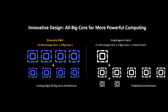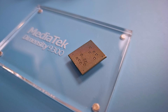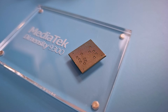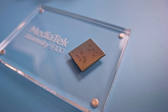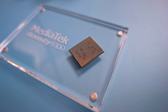The Dimensity 9300 takes a unique approach to the design, calling it all-big-core architecture, with 4 large cores and 4 big cores, which is very different from Qualcomm Snapdragon's traditional design, which includes smaller cores. This is MediaTek's flagship 5G Generative AI Mobile SoC, so of course AI is going to be a big part of the conversation, whether we like it or not.